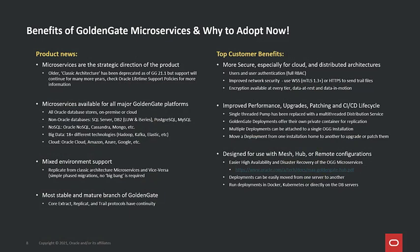Microservices is the strategic direction of the GoldenGate product. It's been the heart of what we've recommended for GoldenGate deployments for a long time. Beginning with GoldenGate 21.1, we've announced the deprecation schedule of the older Classic architecture. You'll have several more years where you can continue to run Classic and get support, but going forward, we want to be totally clear that all new innovations and the strategic direction of the product is microservices.